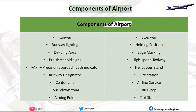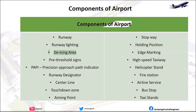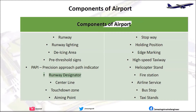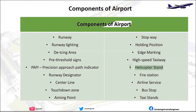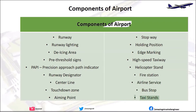The components of an airport include: Runway, Runway Lighting, De-icing Area, Pre-threshold Signs, PAPI (Precision Approach Path Indicator), Runway Designator, Center Line, Touchdown Zone, Aiming Point, Stopway, Holding Position, Edge Marking, High Speed Taxiway, Helicopter Stand, Fire Station, Airline Service, Bus Stop, and Taxi Stands.